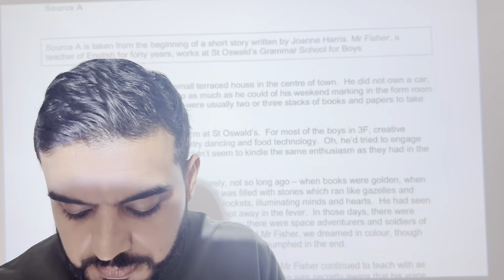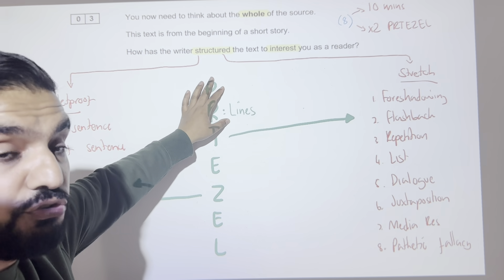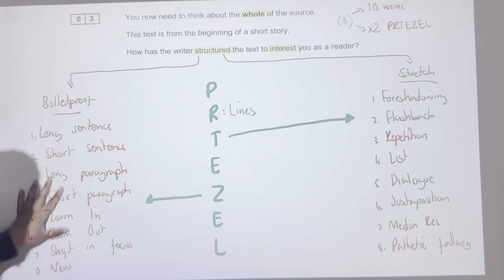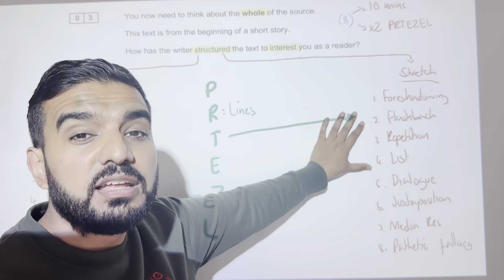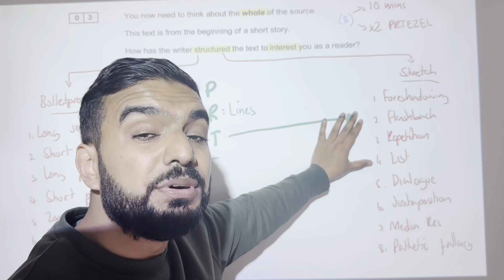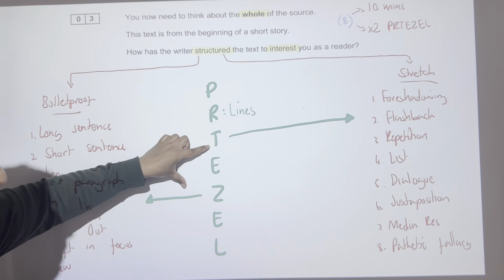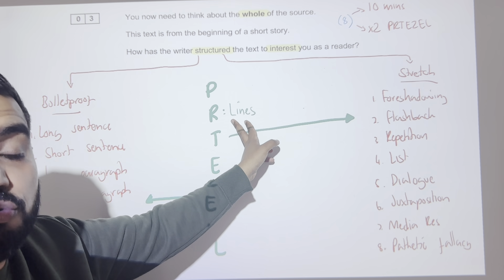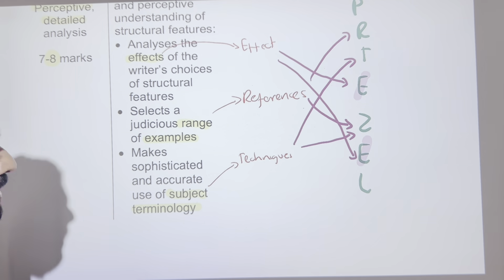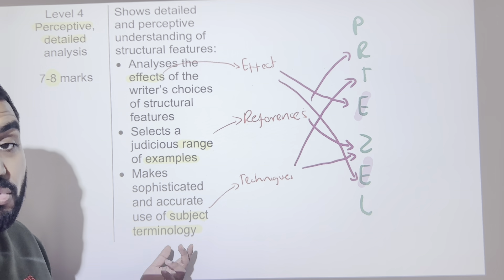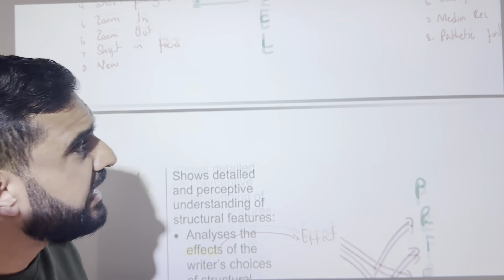Let's recap one more time. Paper one, question three: 10 minutes, two paragraphs, looking at how the writer uses structure to create interest. Structure means structural devices — eight bulletproof devices that are coming up no matter what, and eight stretch devices that are less obvious to spot. Do two pretzel paragraphs, one technique from the bulletproof list and when you zoom in go to the stretch list. Both techniques are found in the same reference. Make sure you're doing effect, referencing, and techniques. Two paragraphs that got eight out of eight.